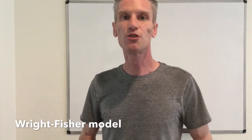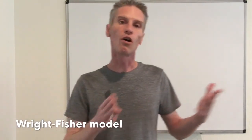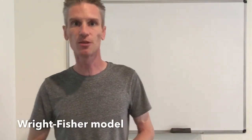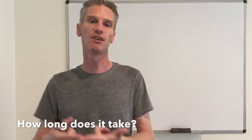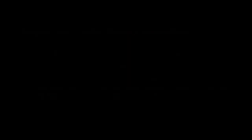I quickly remind you that in the previous two videos we were already able to answer two important questions about the model. The first question is who wins with which probability. We proved that starting with X individuals of type 1, the probability that type 1 eventually outcompetes type 0 is P_X = X/N, the initial fraction of type 1 individuals.